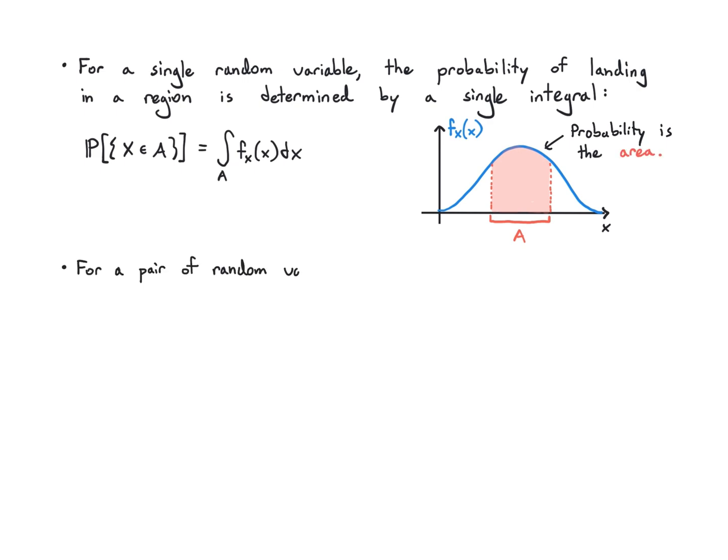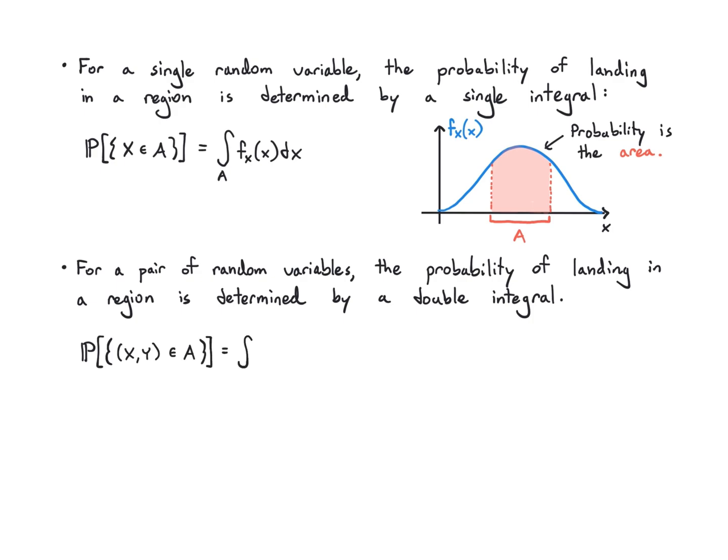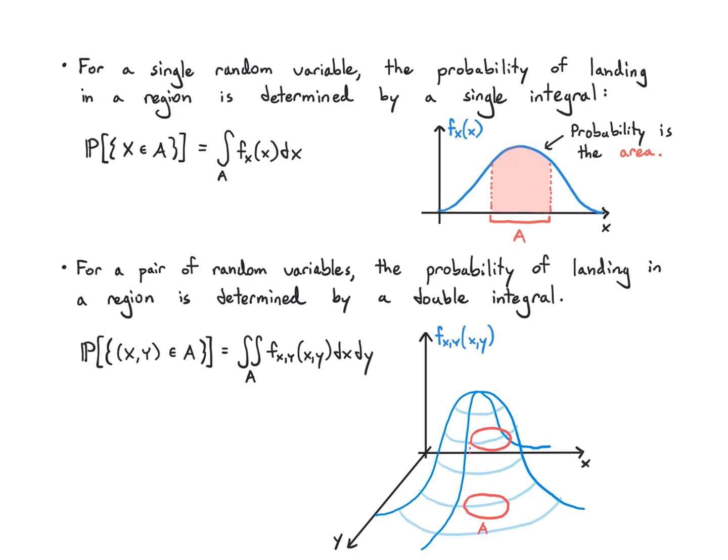For a pair of random variables, the probability of landing in a region is determined by a double integral. We have two variables, we need a double integral. The probability that (X,Y) lands in A just means integrate over this region A over x and y. So I draw this kind of hill—that's my joint PDF—and I want to know the probability I fall into this circle. So I figure out the volume of this curve above this circle.